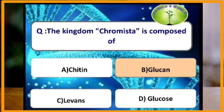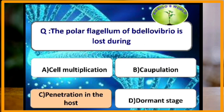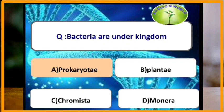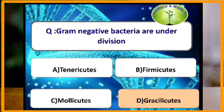The polar flagellum of Bdellovibrio is lost during penetration into the host cell. The largest group of plant pathogenic prokaryotes is bacteria, which belong to the kingdom Prokaryotae. Gram-negative bacteria are under the division Gracilicutes, and gram-positive are under Firmicutes.